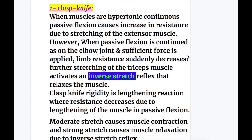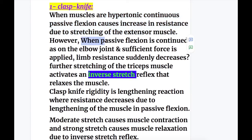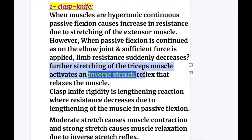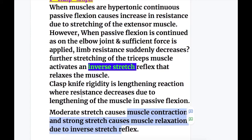Different types of hypertonia in upper motor neuron lesions. Number one: clasp-knife rigidity. When muscles are hypertonic, continuous passive flexion causes increasing resistance due to stretching of the extensor muscles. However, when passive flexion is continued at the elbow joint and sufficient force is applied, limb resistance suddenly decreases — because further stretching of the triceps activates an inverse stretch reflex that relaxes the muscle. This lengthening reaction causes relaxation upon sufficient stretch: moderate stretch causes contraction, and strong stretch causes relaxation.